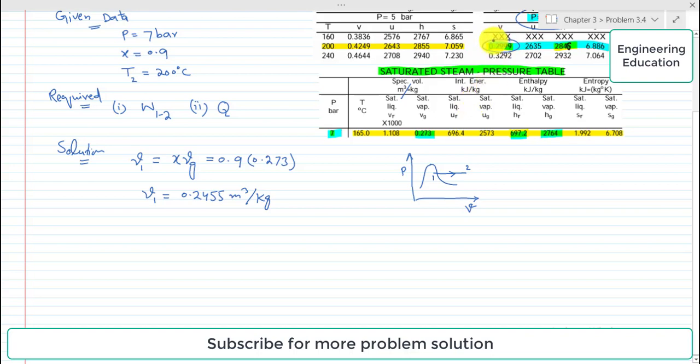So at 7 bar and 200 degrees Celsius, we have the value of v2, and it is 0.3 cubic meters per kilogram.